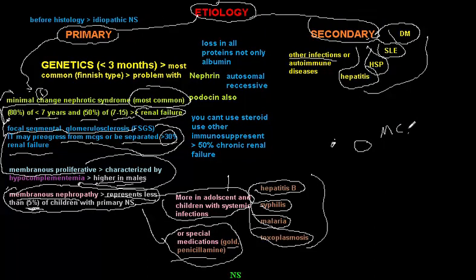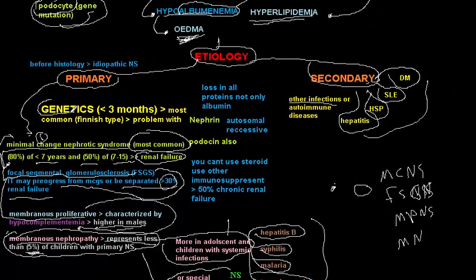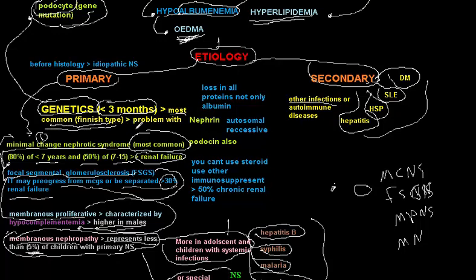Membranous nephropathy may also be predisposed by certain medications such as gold and penicillamine. So to recap the primary types: minimal change nephrotic syndrome, focal segmental glomerulosclerosis, membranous proliferative nephrotic syndrome, membranous nephropathy, and genetic nephrotic syndrome. The genetic type mostly involves a problem in podocytes, and the child must be younger than three months. The most common genetic form is the Finnish-type nephrotic syndrome, involving a problem with nephrin.